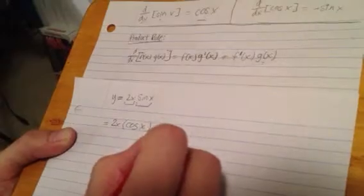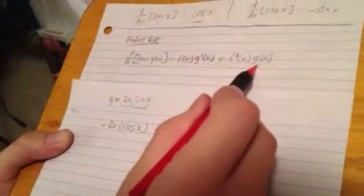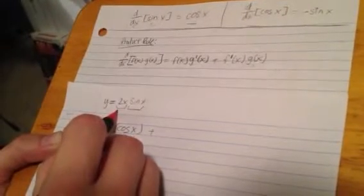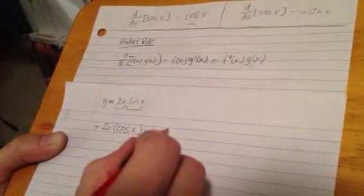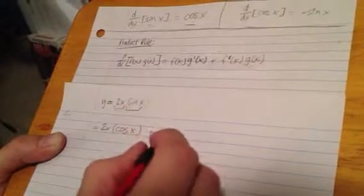plus f prime of x—the derivative of 2x is just 2—times sine of x.